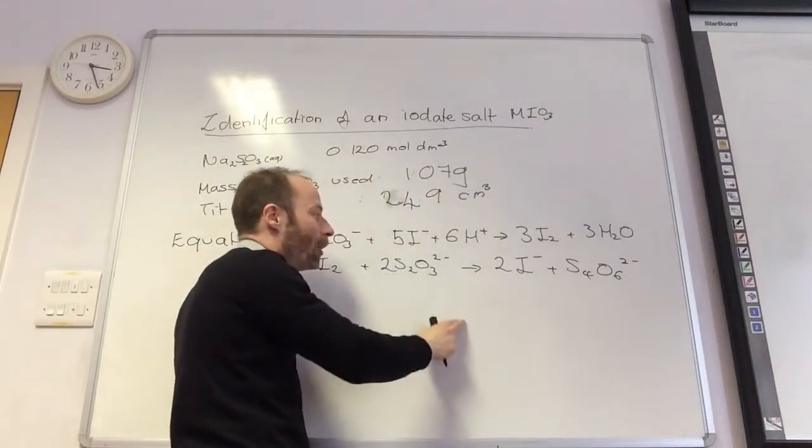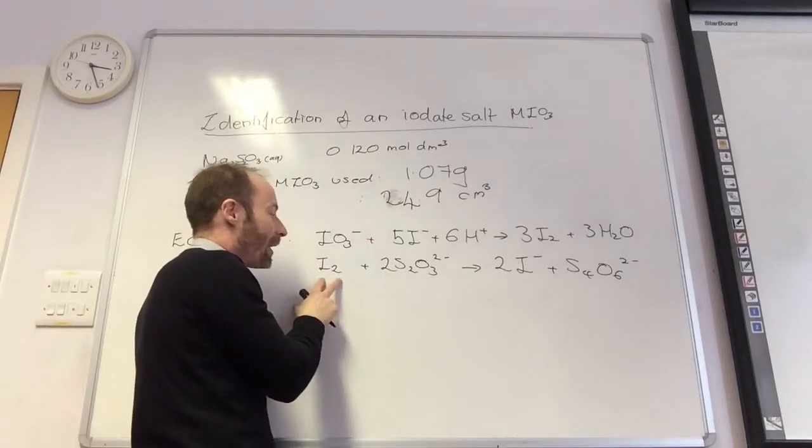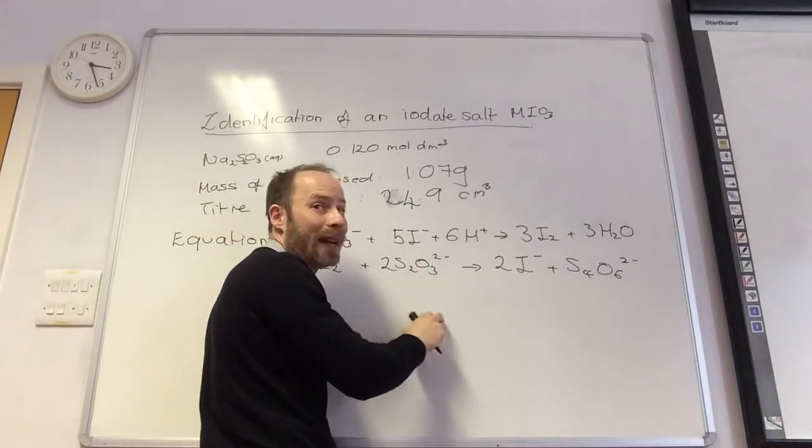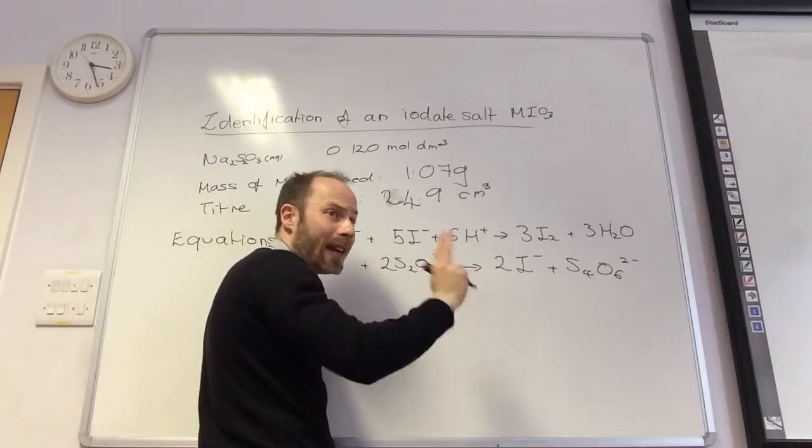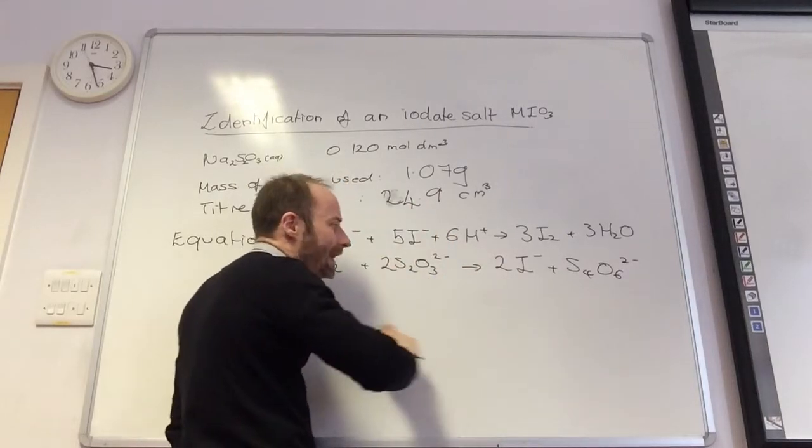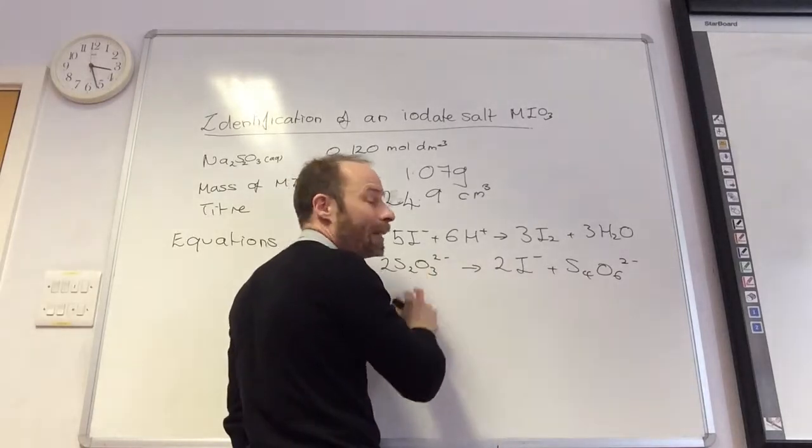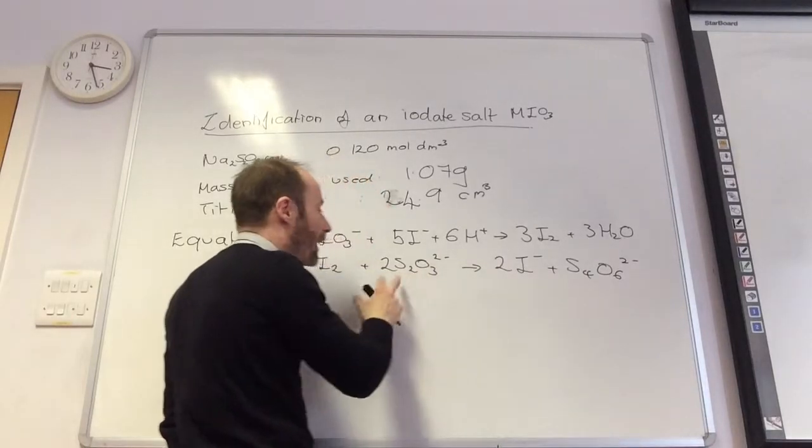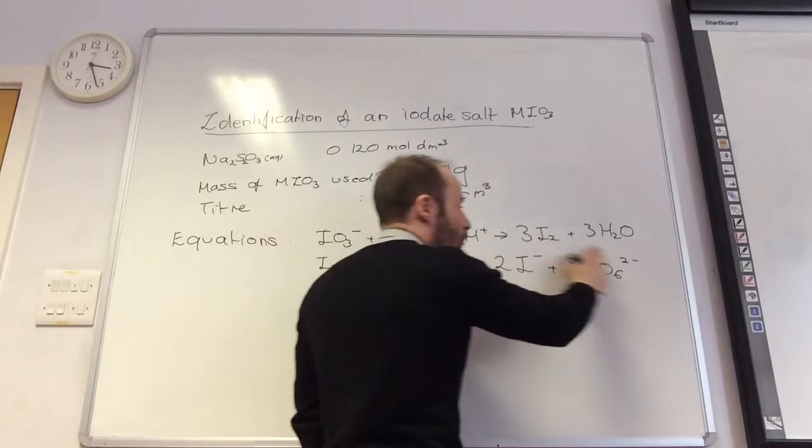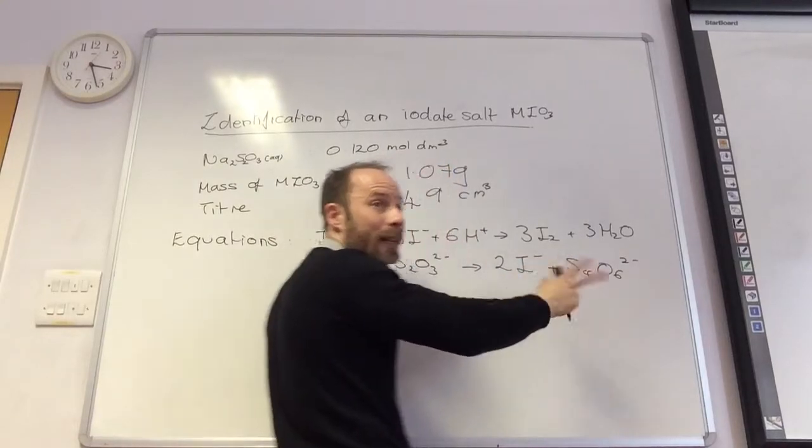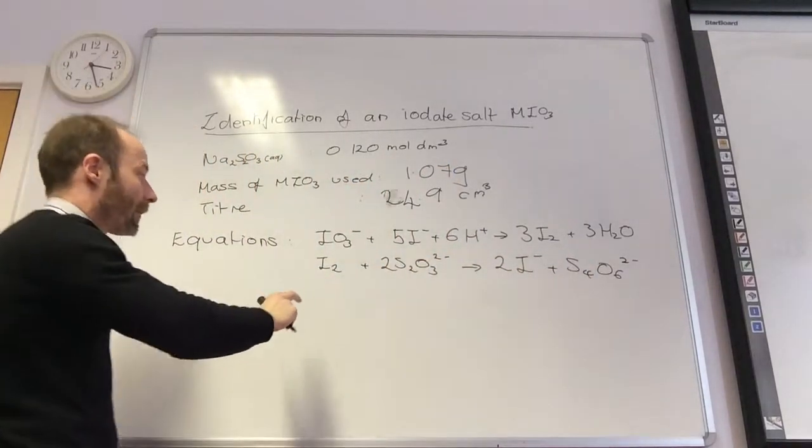Near the end point, because this is brown and that's colorless, it just gets paler and paler and paler yellow. So I don't get a clear end point. So near the end point, I add starch, which goes black, and then my end point is black to colorless when all the iodine disappears. The titre used was 24.9.